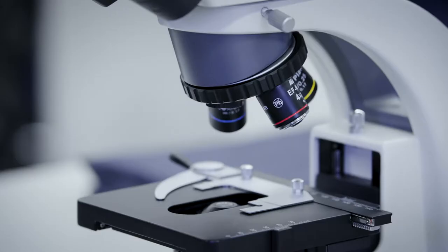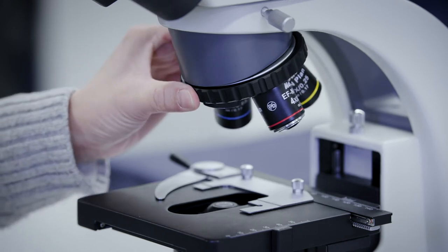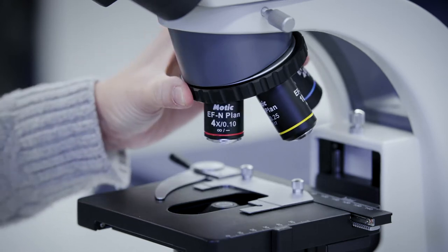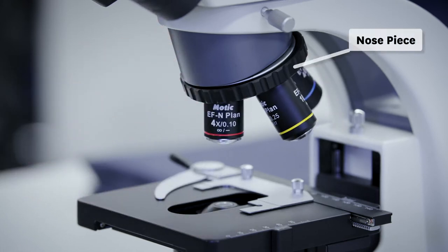Make sure the microscope is set to the lowest magnification using the four times objective. Rotate the nose piece if needed. Don't rotate by holding the objectives. The chosen objective is placed pointing downward towards the light source.